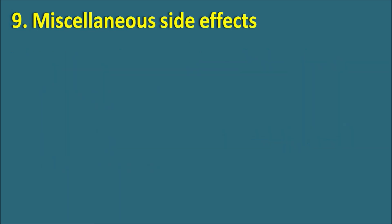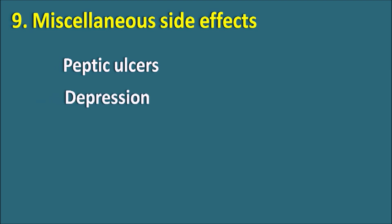Miscellaneous side effects: we can also observe a few other side effects with glucocorticoids. They can produce peptic ulcers due to damage to the gastric mucosa. They can also produce depression, psychosis, and euphoria, which are central side effects that can be observed with glucocorticoids. So that covers the side effects of glucocorticoids, easily remembered by the code HOW GC IS HERO.